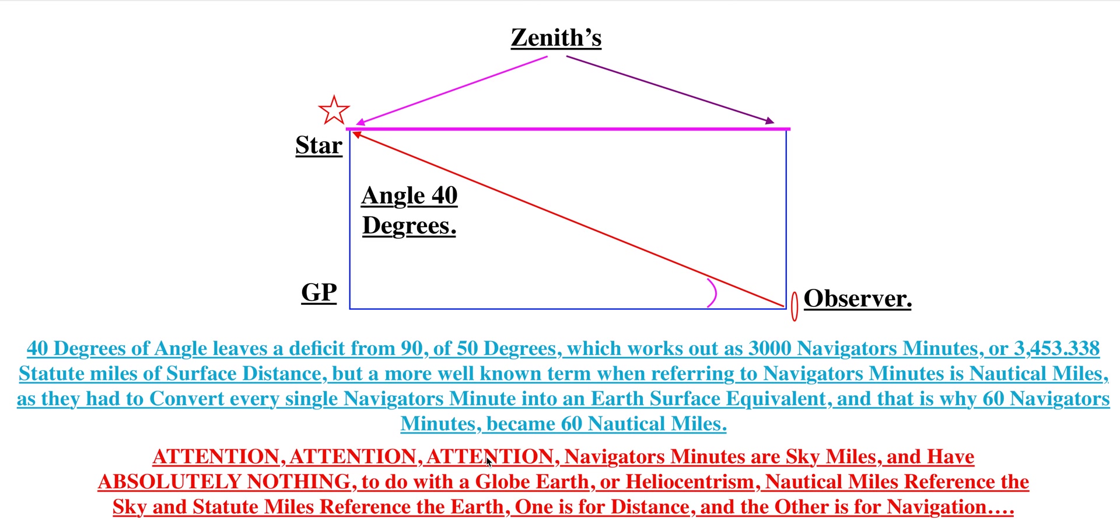Attention, attention, attention. This is the important part. Navigators' minutes are sky miles and have absolutely nothing to do with a globe or heliocentrism. Nautical miles reference the sky and statute miles reference the earth. One is for distance, statute miles, and the other is for navigation, nautical miles or navigator's minutes.